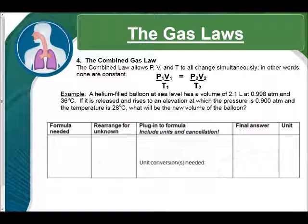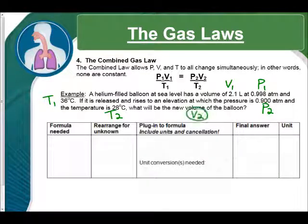Okay, the best way to approach these is as you read them. We say a helium-filled balloon at sea level has a volume of 2.1 liters. That is my V1. At 0.998 atmospheres, that is my P1. And 36 degrees Celsius, that is T1. Now if it's released and rises to an elevation at which the pressure is 0.900 atmospheres, we just saw P2, and the temperature is now 28 degrees, that's T2. They're going to ask us what will the new volume of the balloon be? That is V2, and that is what we were trying to find.